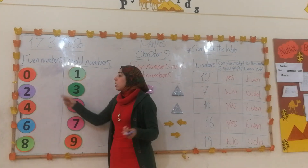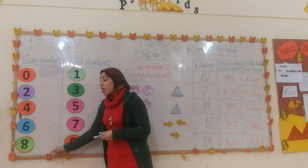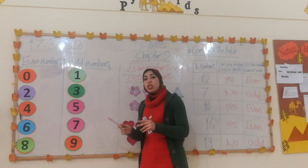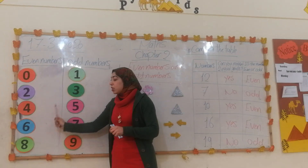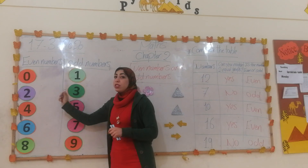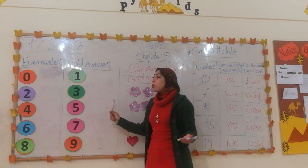Even numbers — like what? 0, 2, 4, 6, 8. This group of numbers — 0, 2, 4, 6, 8 — is called even numbers.